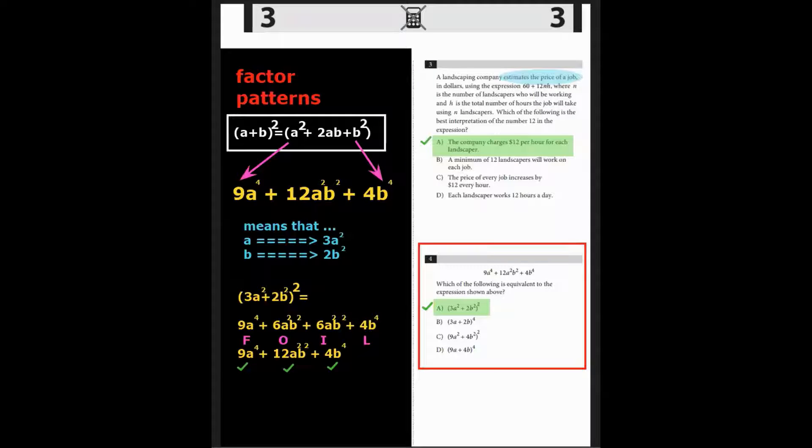Question 4. 9a to the 4th plus 12a squared b squared plus 4b to the 4th. Which of the following is equivalent to the expression shown above? Well several students asked me how to solve this equation. And if it's getting difficult for you, remember that with algebraic expressions you could plug in a value for A and B.